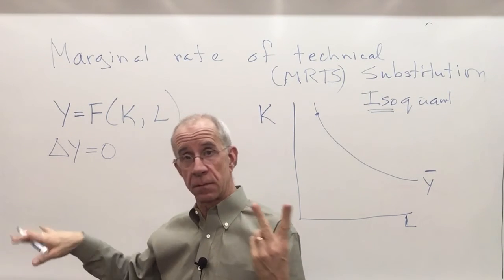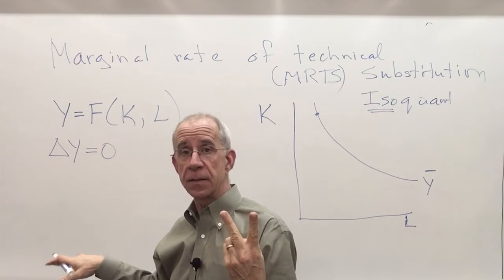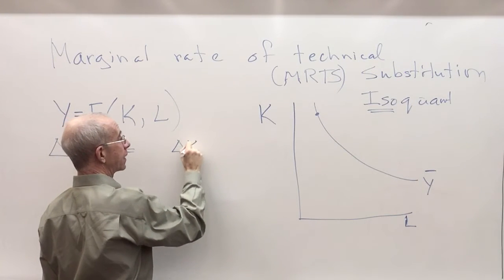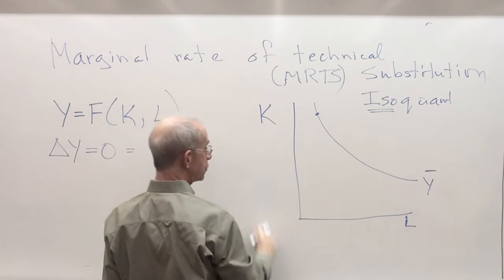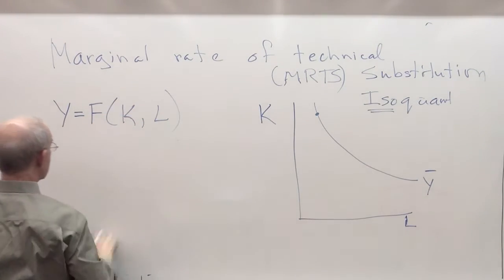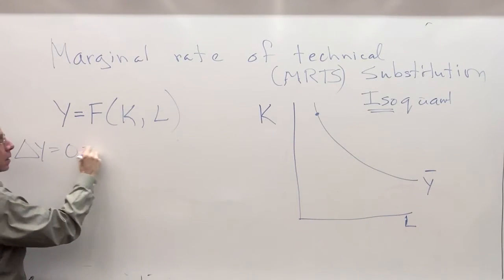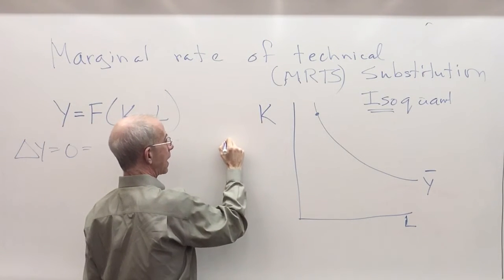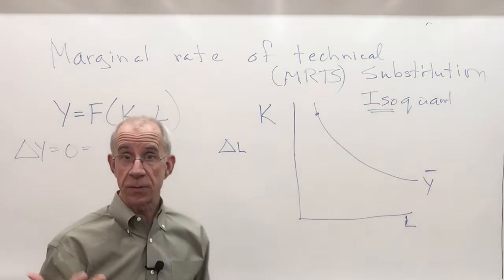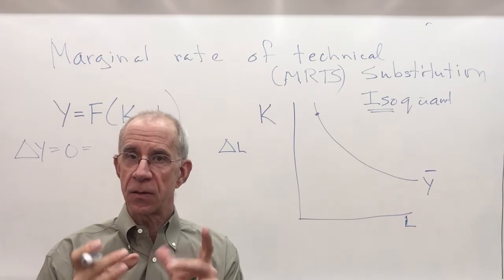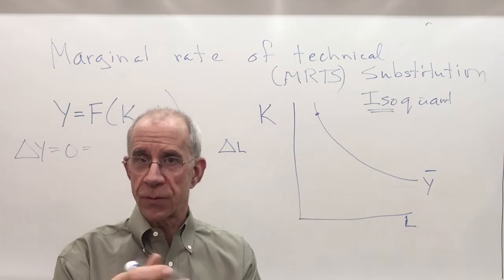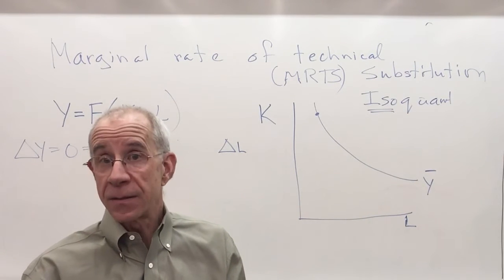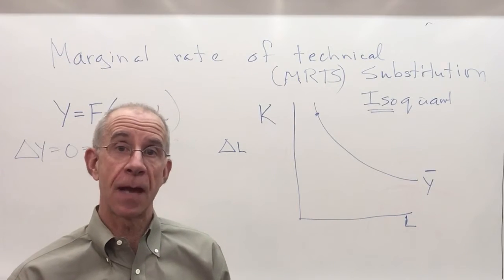It can, holding technology fixed, and we're holding that constant, output can change because of either a change in the use of capital or a change in the number of units of labor used, but we also need to look at not just how many more units of capital, but how much extra output each unit of capital creates. We need to use the marginal productivity of capital, in other words.